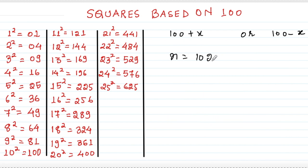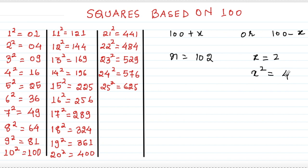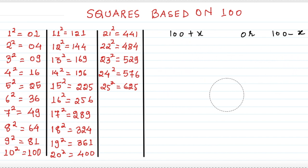Another example: 102. Here x is 2 and x² is 4, which is a one-digit number. Since we need two digits, we add a leading zero to make it 04. You can see in the squares table I've written 01, 04, 09 for the same reason — converting one-digit numbers to two digits by adding a zero in front. So the last two digits of n² are 04, and n plus x is 104, giving n² as 10404.